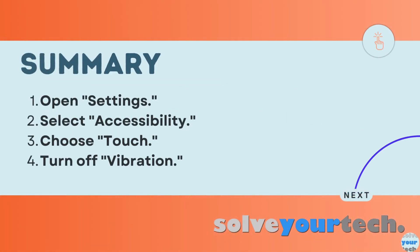To summarize, when you want to turn off the vibration on your iPhone, you need to open the settings menu, choose the accessibility option, select touch, then scroll down and tap the vibration button to turn it off.